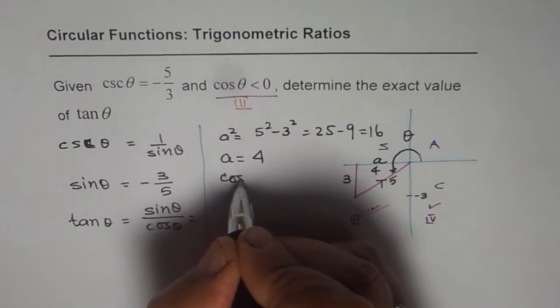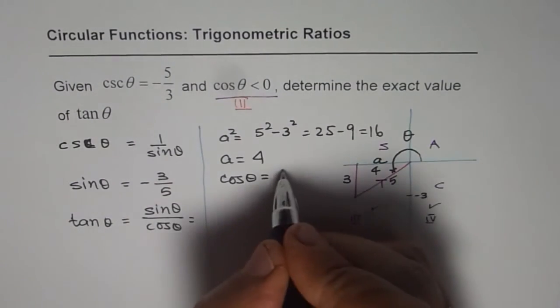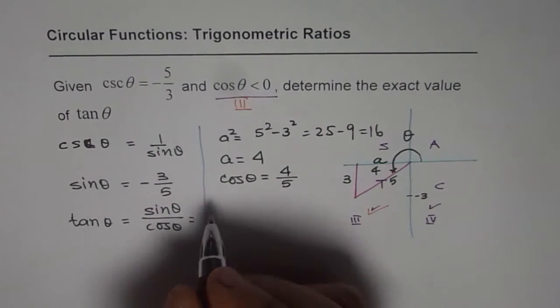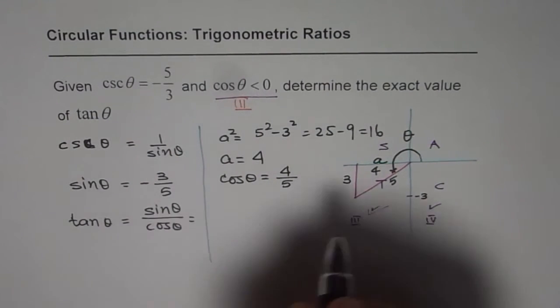So we can have cosine theta as equals to adjacent side 4 over 5. Now using this, cosine theta is 4 over 5. Sine theta is, I'm sorry, it is also negative.